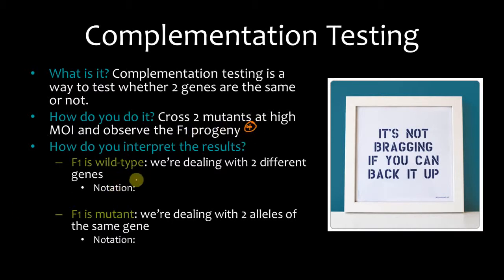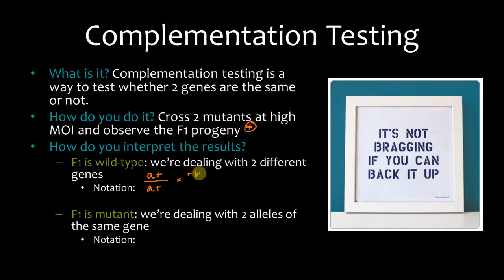So how do you interpret the results? If the F1 is wild type, then we're dealing with two different genes. So let's say that we're dealing with the A gene crossed with a mutant of the B gene. You'd write it like this — this is one gene, and this is a different gene.